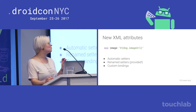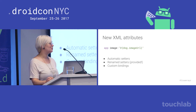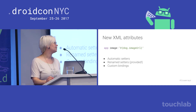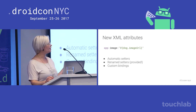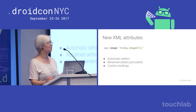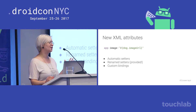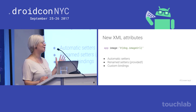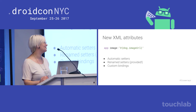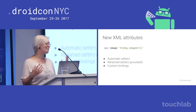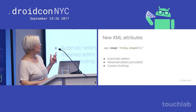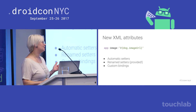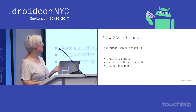You can also make new XML attributes — one of my favorite parts of data binding. For example, you can have an image attribute which takes in an image URL. There are three ways: automatic setters, rename setters, and custom bindings. The last one is the only one you'll really do yourself. If there is a public setter with the same name as the attribute, then you can consider this a sort of synthetic attribute — data binding will look for a setter with the same name using Java naming conventions.